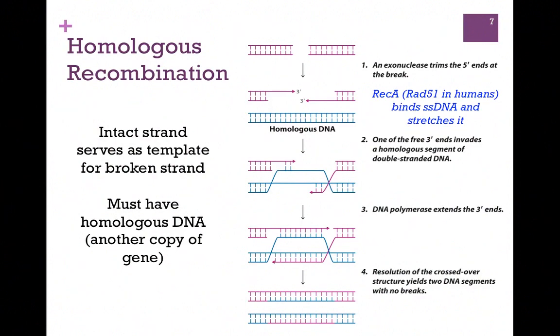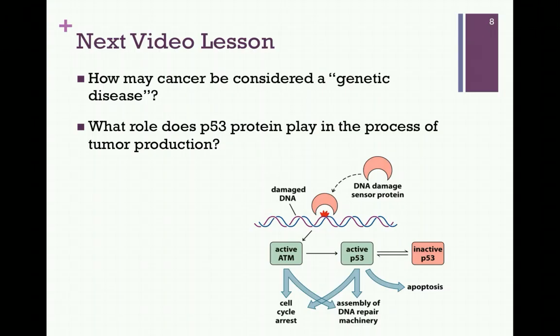Again, we have to have a homologous gene, and that's why it's not the most common way of correcting these types of breaks. In the next video lesson for Chapter 20, we want to see how cancer may be considered a genetic disease, and what role the p53 protein plays in the process of tumor production.